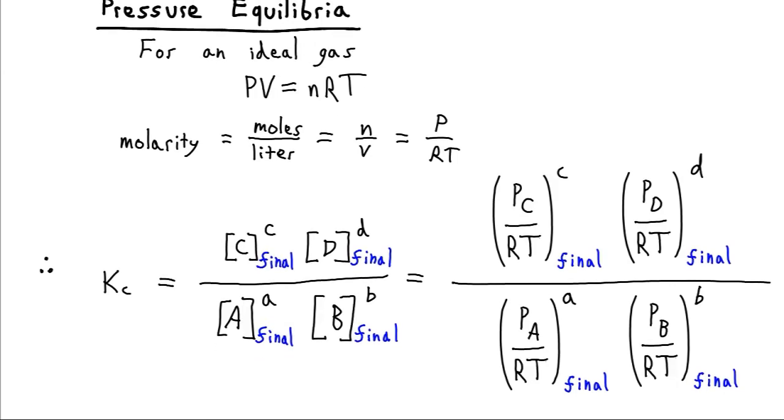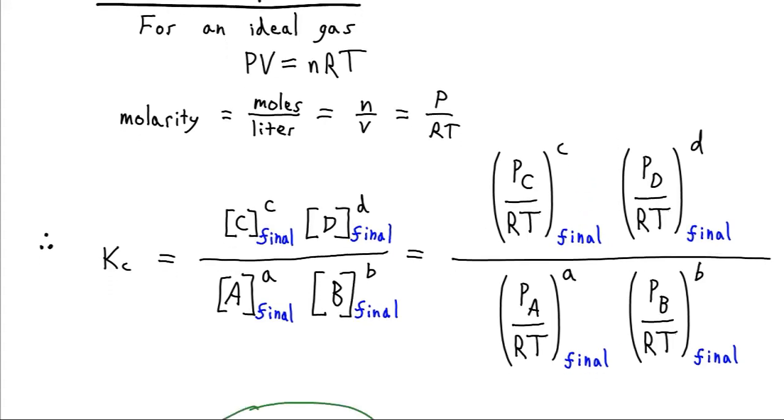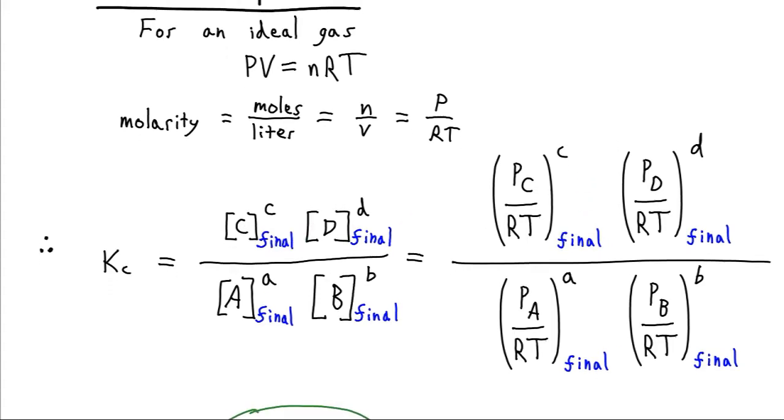Well now we can make a straightforward substitution. Wherever we see a concentration, we can replace it with a P over RT term. And so we replace all these concentrations in our equilibrium constant with the pressures over the RTs raised to the power of their stoichiometric coefficients. And just a reminder, as always, at equilibrium we waited a really long time. So these are all the final concentrations.